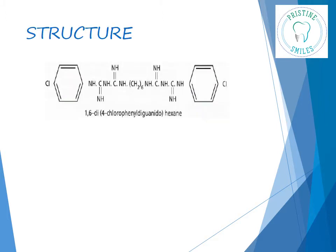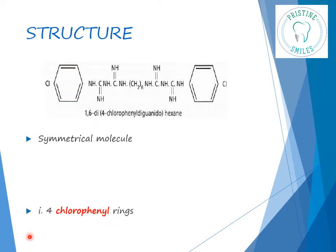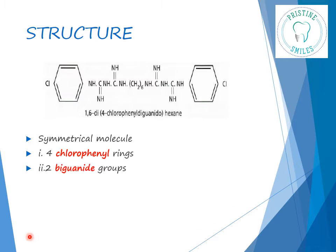This is the structure of chlorhexidine. If you see, it is a very symmetrical molecule. There are three things you need to remember here: it is composed of four chlorophenyl rings, two biguanide groups — hence the term bisbiguanide — and there is a central hexamethylene bridge. This bridge connects the chlorophenyl rings to the biguanide groups.